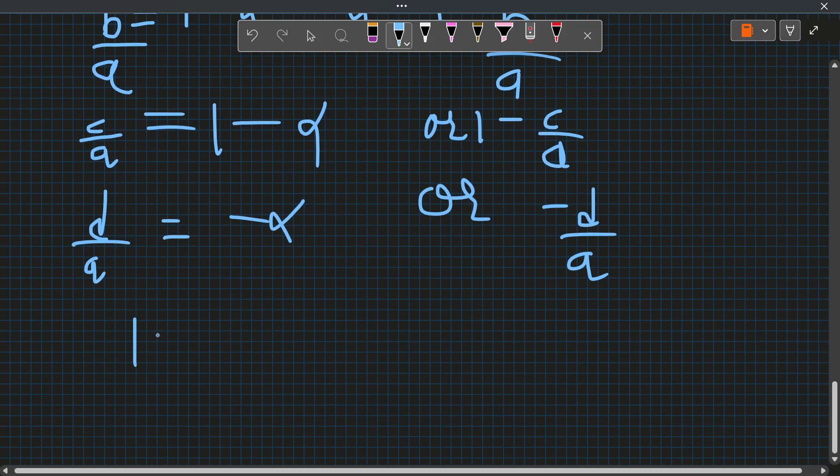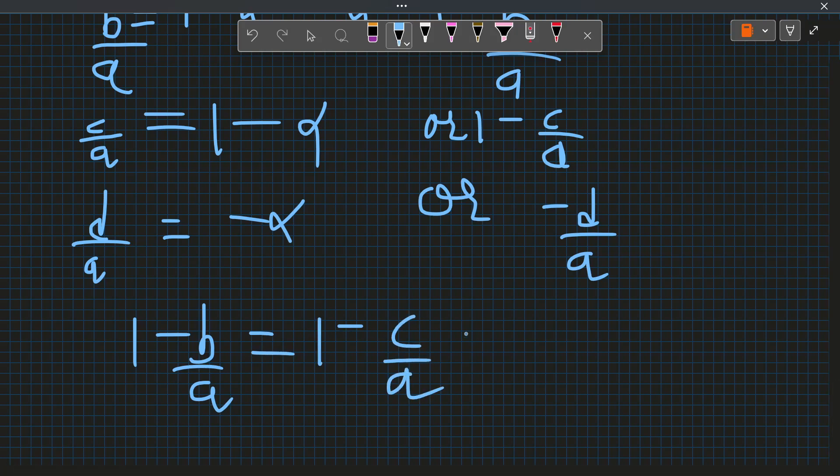Because then we would have 1 - b/a equal to 1 - c/a equal to -d/a, because it is the same root. So all these would have been equal.